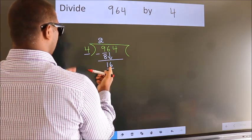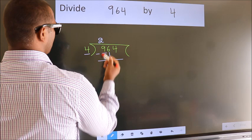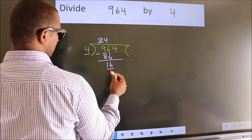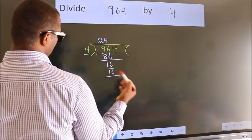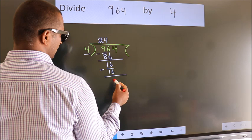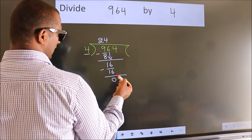When do we get 16? In 4 table. 4 fours, 16. Now we subtract. We get 0. After this,